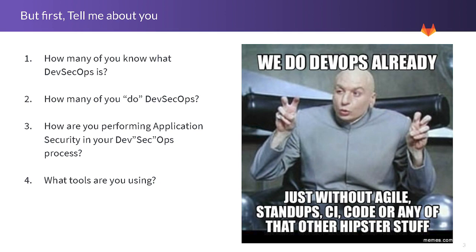How are you performing application security in your process? Is it happening during the development lifecycle, or is it a screeching halt where developers are just churning out code and then security raises up their hands saying you've got stuff in your code you've got to go fix? That happens a lot.